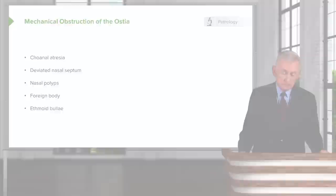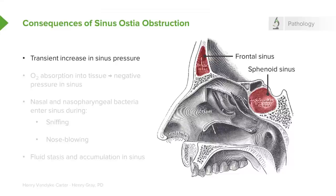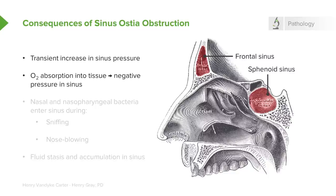So we've been talking about blockage of the sinus ostia — what are the consequences? If the sinus gets blocked, you initially get an increase in sinus pressure, and fluid is going to build up behind the blockage. Eventually the oxygen is absorbed out of the blocked sinus, and eventually there will be negative pressure in the sinus.